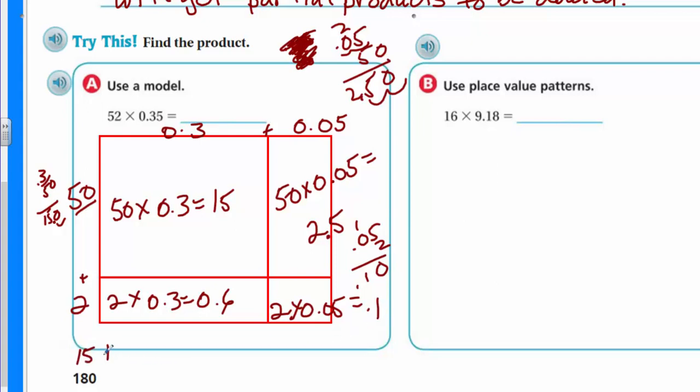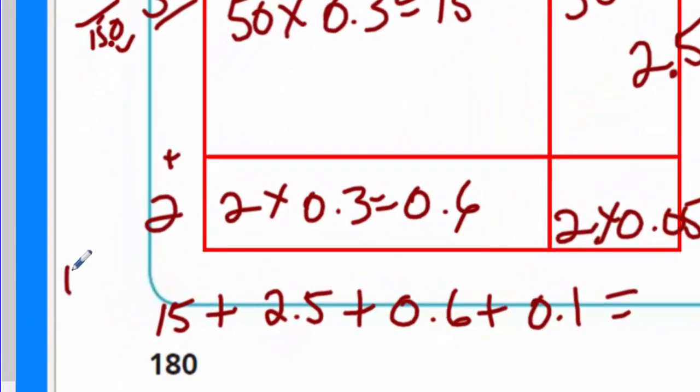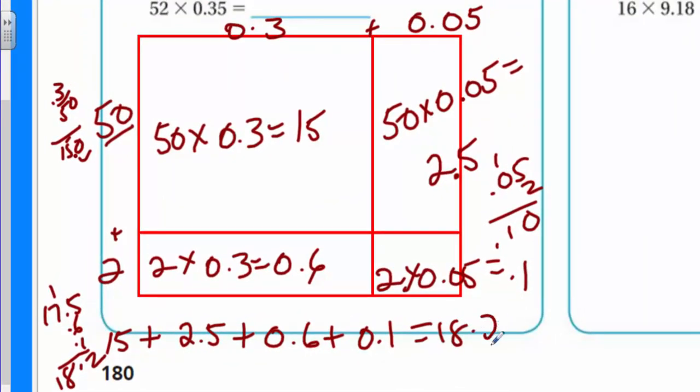I have 15 plus 2.5 plus 0.6 plus 0.1. Here I have 17 and a half. So I'm going to put 17.5. I have also 0.6 and 0.1. That's 12. Make sure my decimals are in the line. End up with 18.2. That's the answer I got.